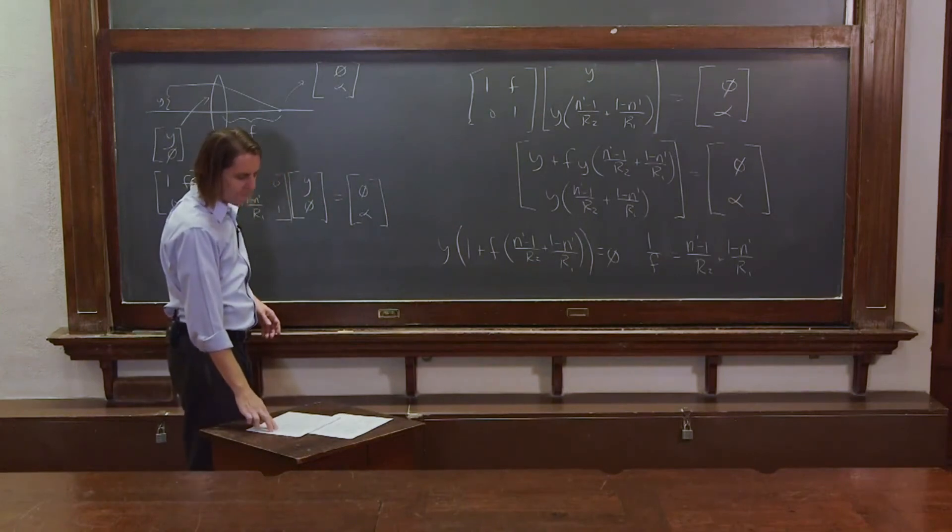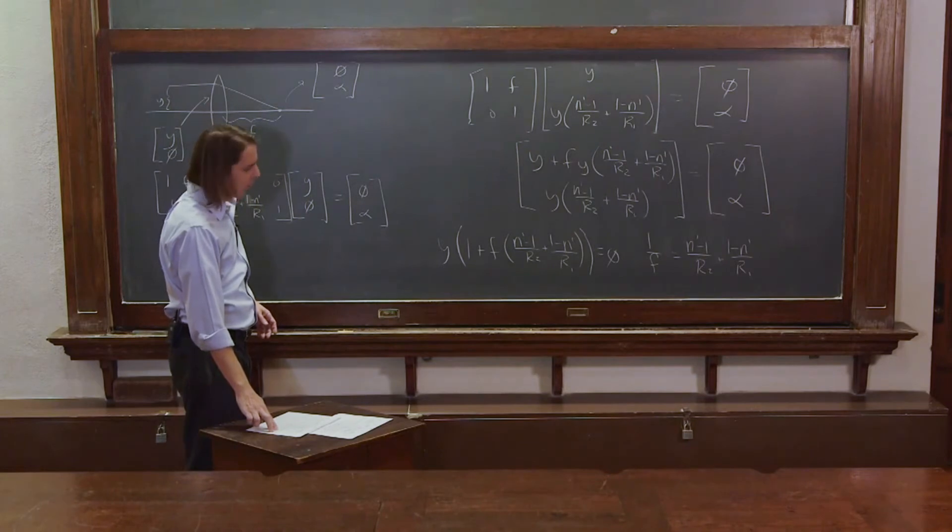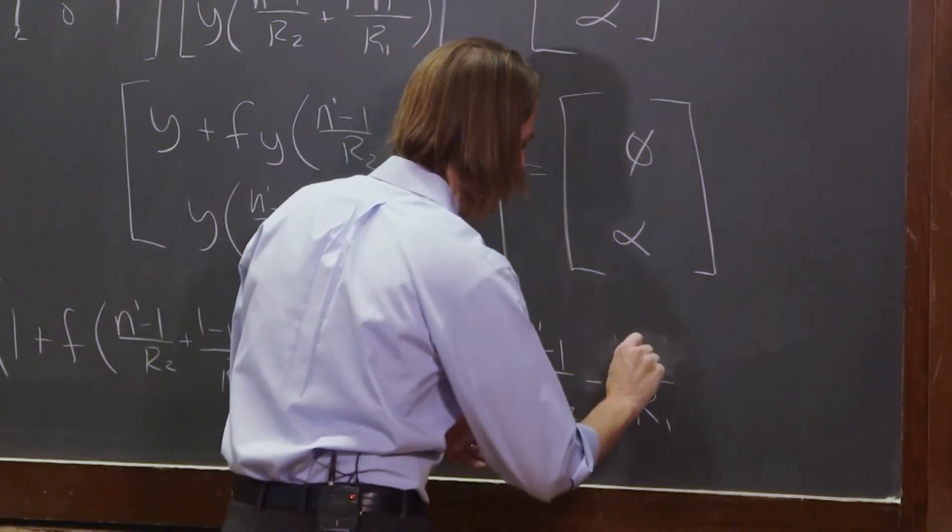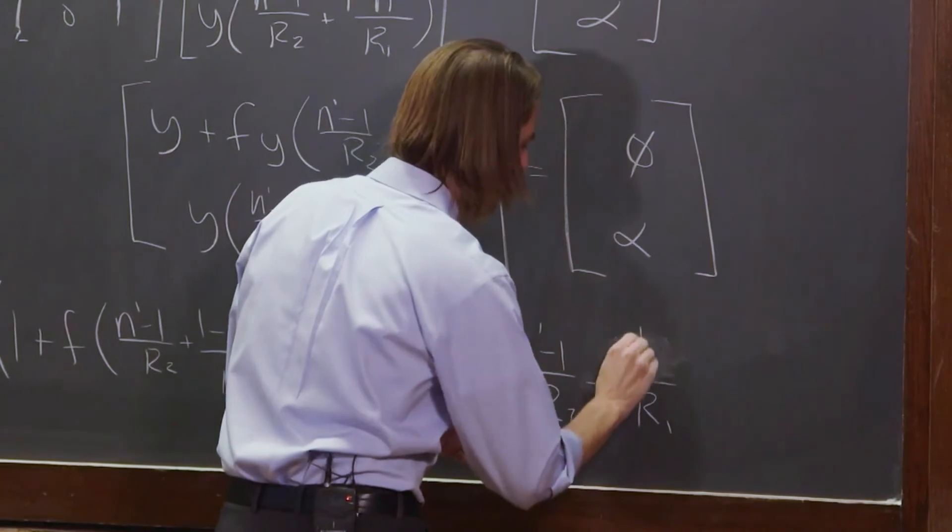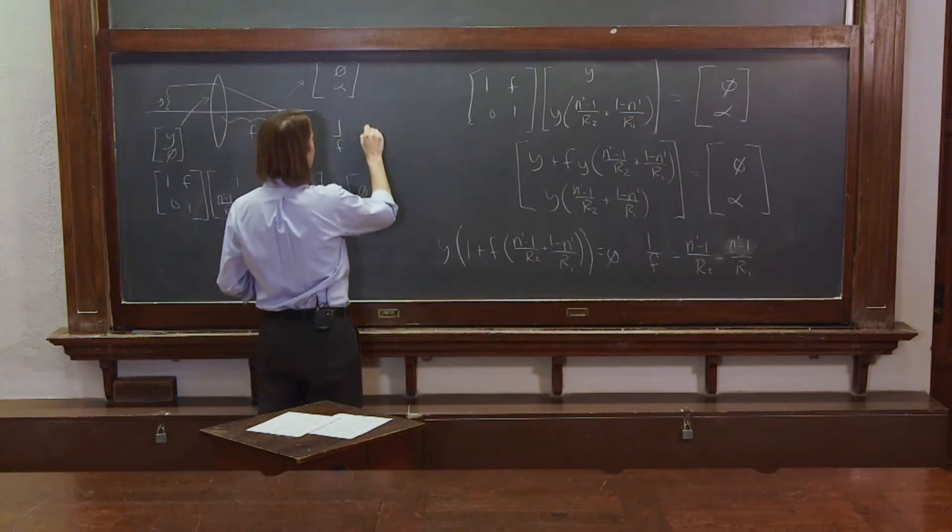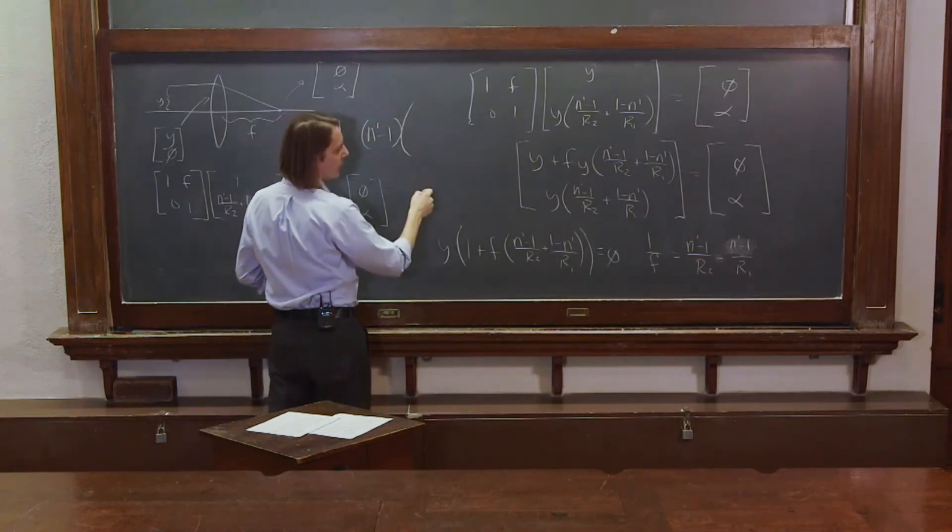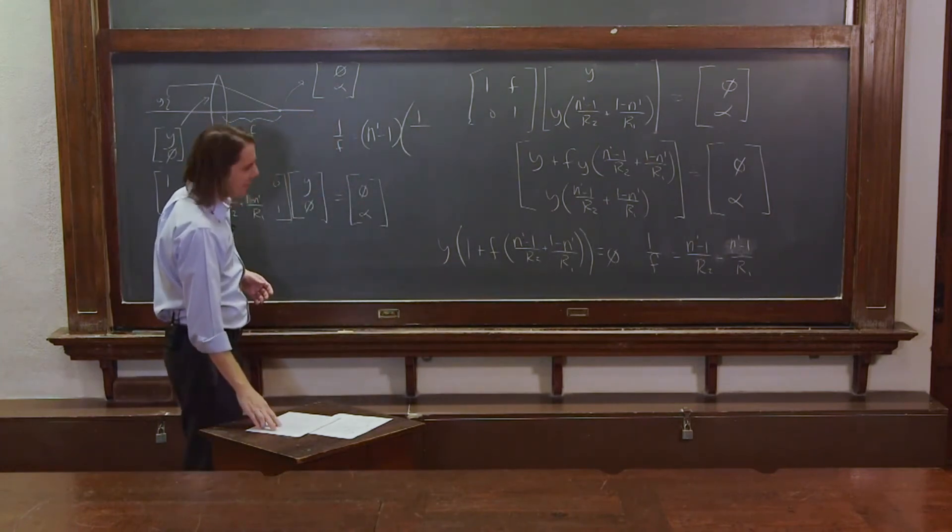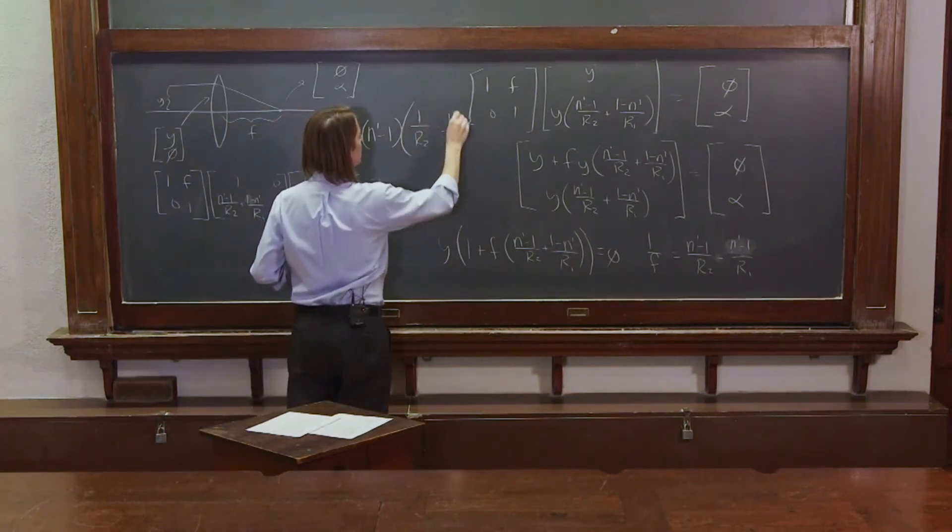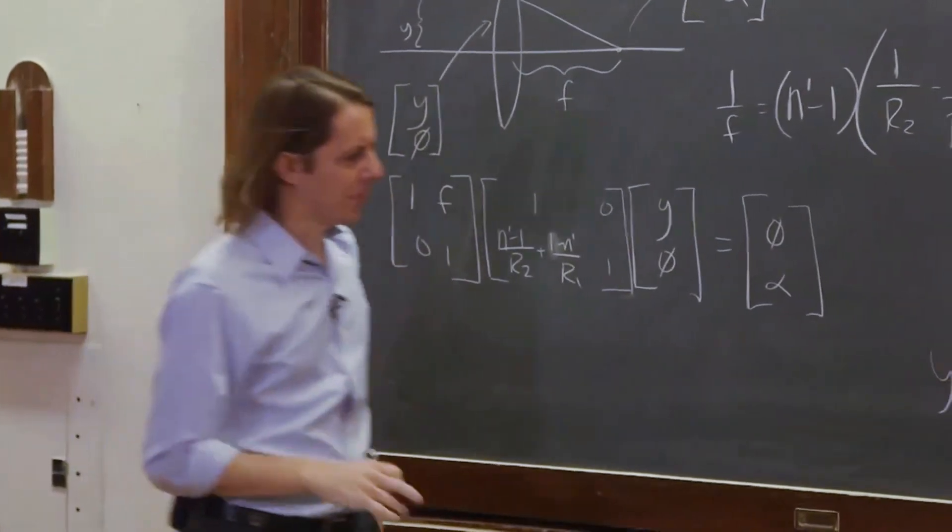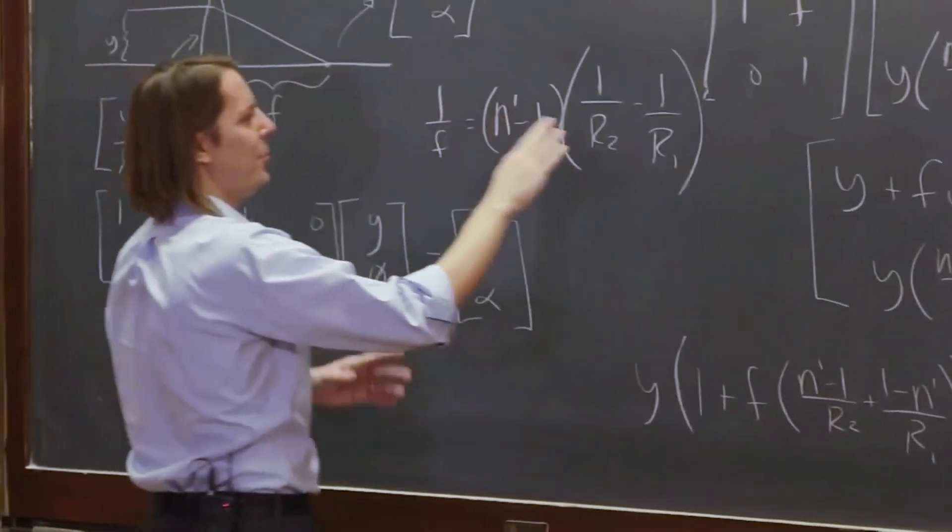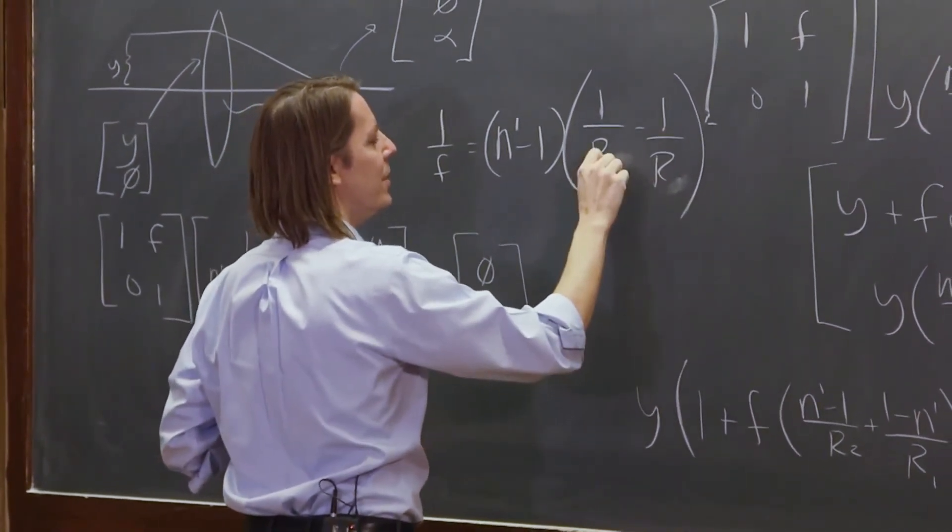That's starting to look fairly familiar because what we can do is realize that if we just make this negative, then this becomes 1 minus n prime, or n prime minus 1. Then we can factor out an n prime minus 1, and we find that 1 over f equals n prime minus 1 times 1 over r2 minus 1 over r1, but I've dropped a negative sign somewhere. Negative 1 over f, so if you want to do positive 1 over f, you can reverse these two.